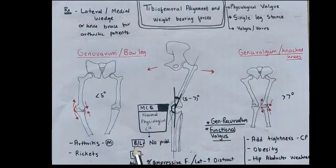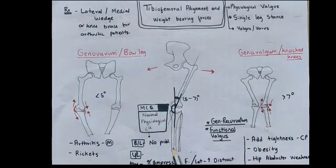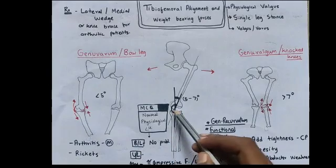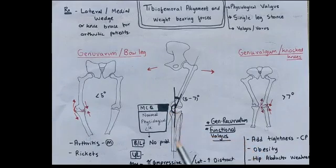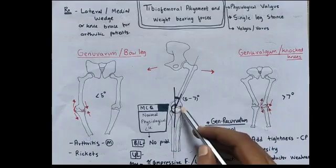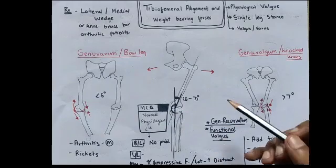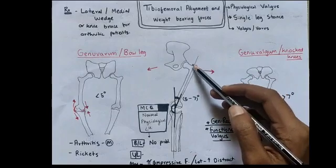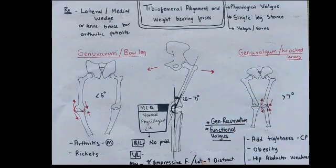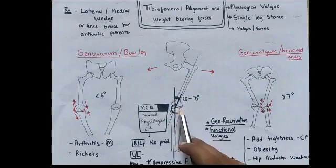In bilateral stance, when a person stands on both feet, this angle does not create any problem. But in unilateral stance, there are increased medial compressive forces — in the medial compartment of the knee joint there will be increased compressive forces, and in the lateral compartment there will be increased distractive forces. This gets exaggerated if the proximal muscles are weakened, making it a very important aspect of knee joint biomechanics.